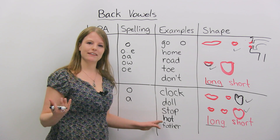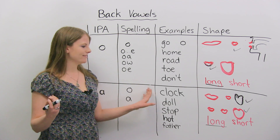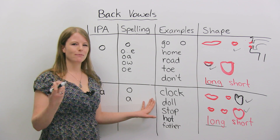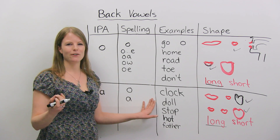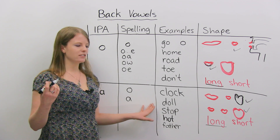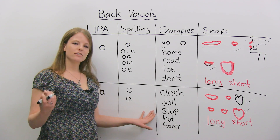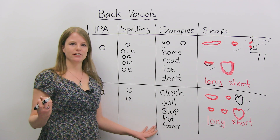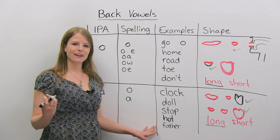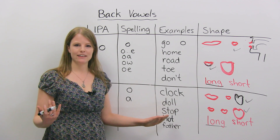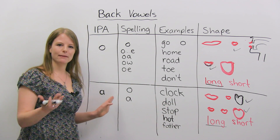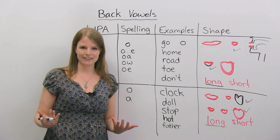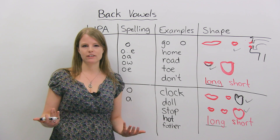Let's do some practice. Repeat after me: clock, clock. If you're having trouble, remember going to the doctor — you can start off with "ah", then: clock, doll, doll, stop, stop, hot, hot, father, father. In different dialects these might be pronounced slightly differently, but the key is that these sounds you've learned today exist in these different dialects, so you will come across different words with these sounds.